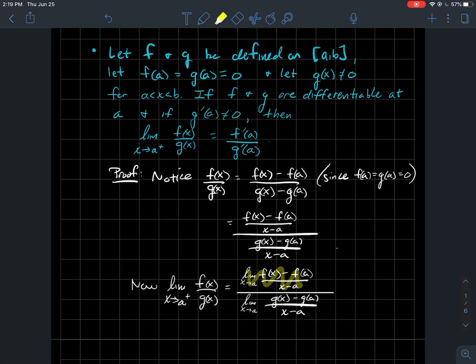This limit up here is f prime of a. Similarly, this limit down here is g prime of a. And I know that I could say that because I assume that f and g are differentiable. Therefore, I can take for granted that those limits exist and that they should be f and g prime of a respectively.